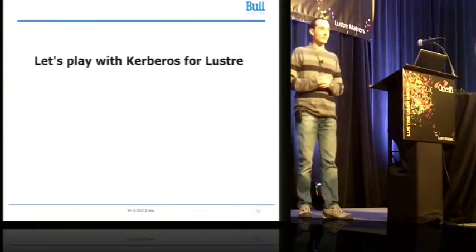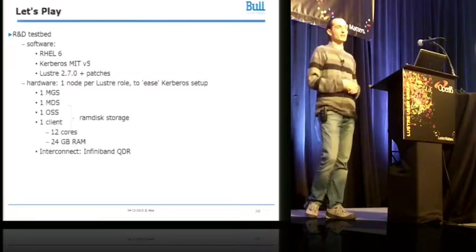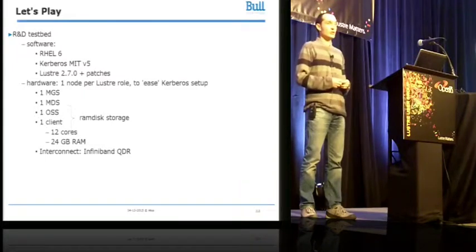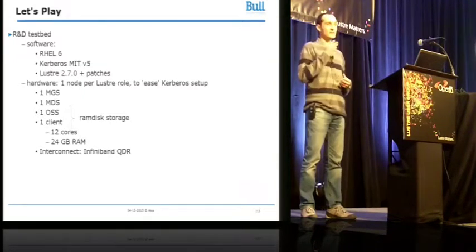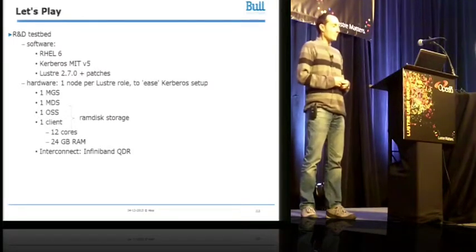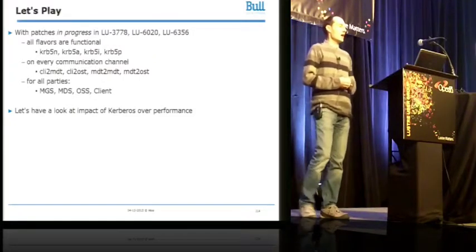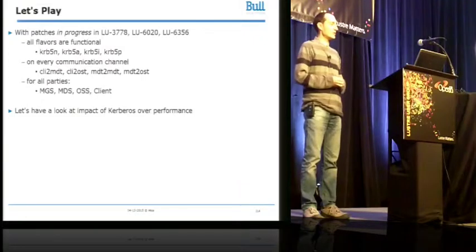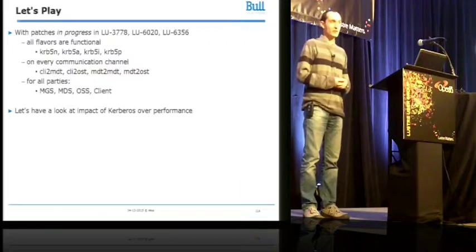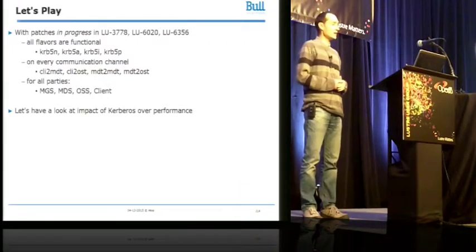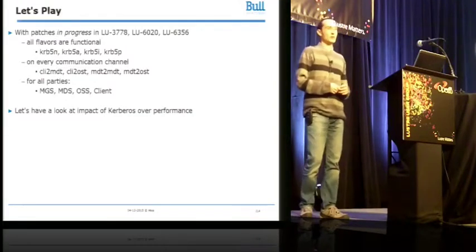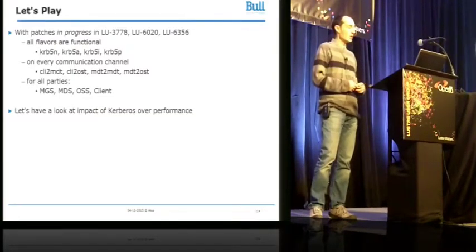So now let's play with Kerberos. Our hardware configuration: Red Hat 6, Kerberos MIT V5, Lustre 2.7.0 plus all the patches mentioned earlier. To ease Kerberos configuration, we dedicated one node per Lustre role — one MGS, one MDS, one OSS, each using RAM disk storage. We have one client node with 12 cores and 24 gigs of RAM and a single InfiniBand QDR network interconnect. The really good news is that Kerberos support is now functional — for all Kerberos flavors, on every communication channel, and for all Lustre servers and clients. But because we are HPC, performance matters, so let's look at the impact of Kerberos on performance.